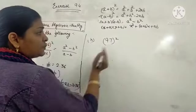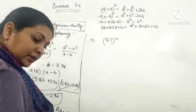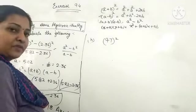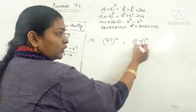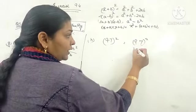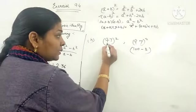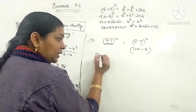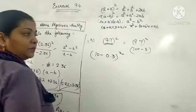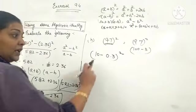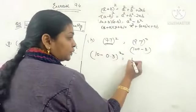In H part, it is 9.7 square. Whether it is 9.7 square or 97 square, what you will do? You will write 100 minus 3 if it is 97 square. But here it is 9.7 square, so write 10 minus 0.3. Now 10 minus 0.3, it is A minus B whole square. Substitute the values.